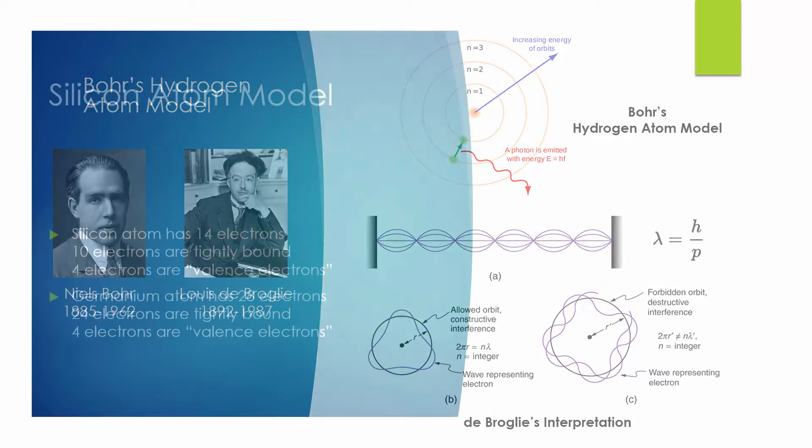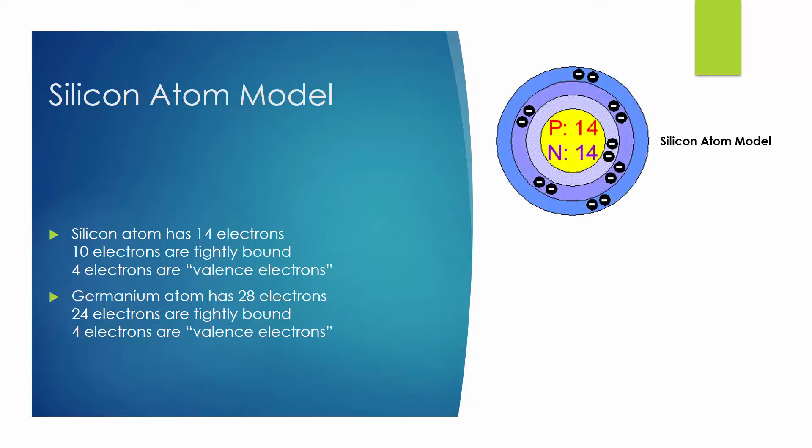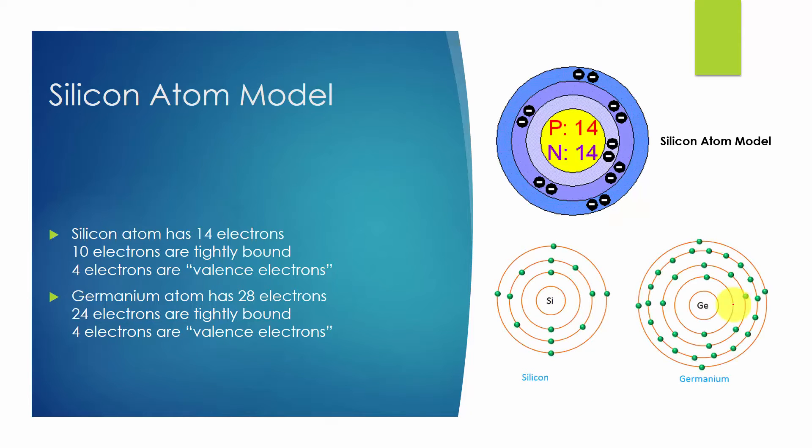Hydrogen atom has only one electron. On the other hand, the energy level scheme in semiconductor materials such as silicon is much more complex because they have multiple electrons. A silicon atom has 14 electrons and a germanium atom has 28 electrons.